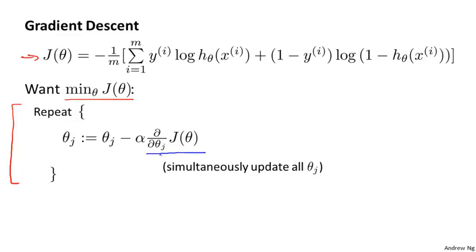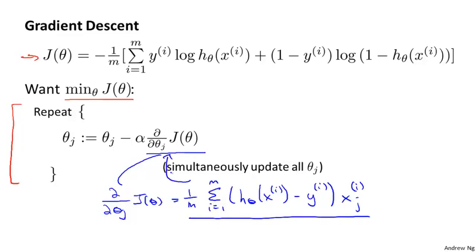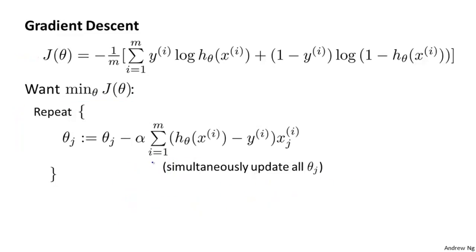If you know some calculus, feel free to take this term and try to compute the derivative yourself and see if you can simplify it to the same answer that I get. But even if you don't know calculus, don't worry about it. If you actually compute this, what you get is this equation. It's sum from i equals 1 through m of essentially the error times x i j. So if you take this partial derivative term and plug it back in here, we can then write out our gradient descent algorithm as follows. And all I've done is I took the derivative term from the previous slide and plugged it in there.